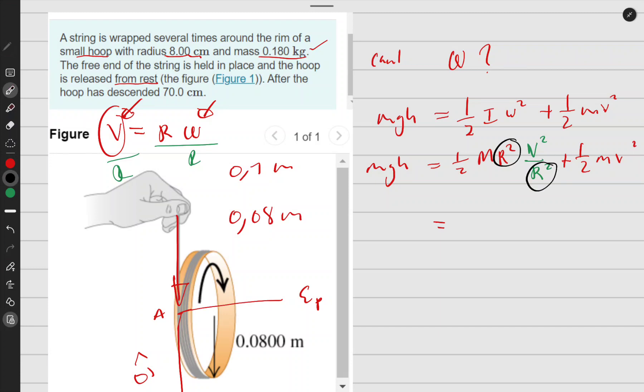This will obviously disappear, and I'll be left with (1/2)MV² plus (1/2)MV², which gives me a full MV².